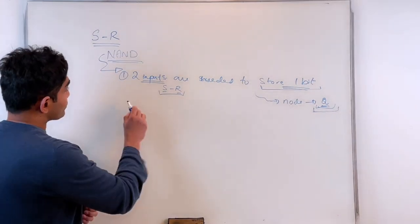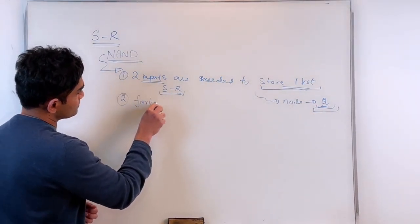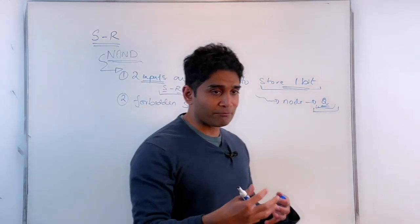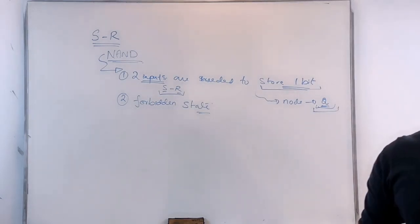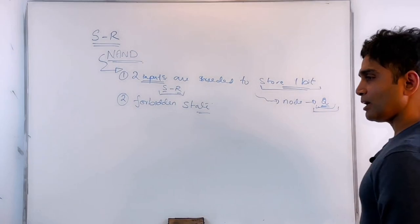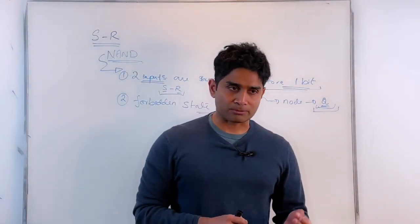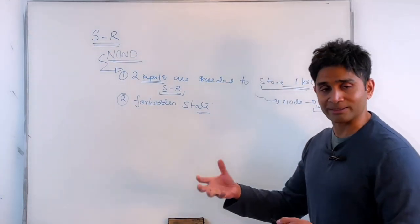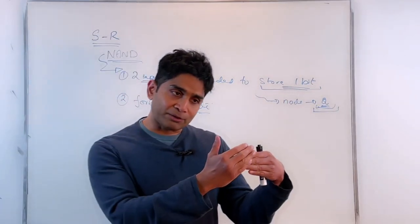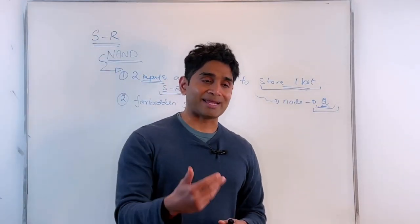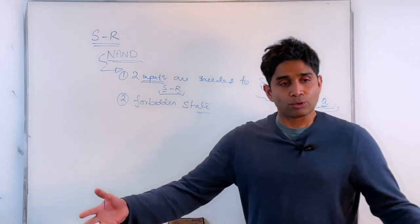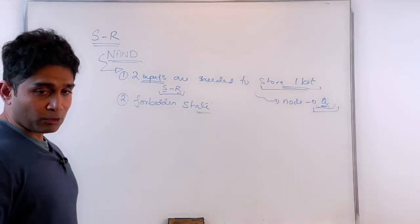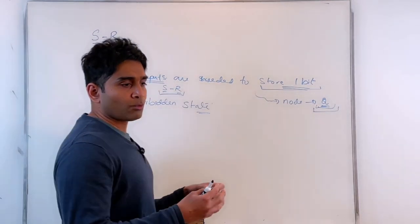We also identified a forbidden state in both versions of the latch. A forbidden state is one where the output is indeterminate — I don't know what the output is going to be. When working with billions of these units, the output depends on the speed of individual gates, so I cannot know what the output will be. That's why we call it the forbidden state — a state you don't want to work with.